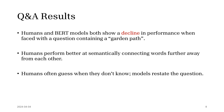The results show a decline, and humans are better at semantically connecting words that are further apart — so as a pronoun gets further from its intended subject, models get more confused than humans would. Humans often guess, while models will restate the question or say something unrelated if they don't know.